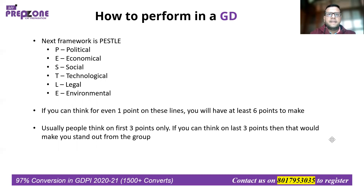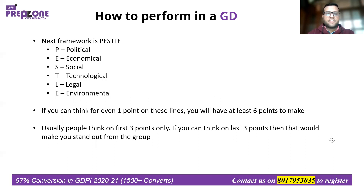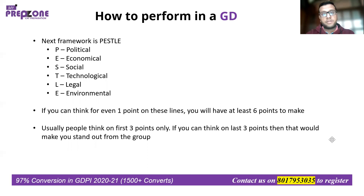If you're not able to think of one or two points under a PESTLE category, that's perfectly fine — three to four relevant points still work well. Also understand that you should have a good bank of points, because some will be common and others will speak to them too. But using KWA and PESTLE together gives you a repository of 10 to 12 points. Even if 80 percent of your points are taken by others, you're still left with two or three unique ones.